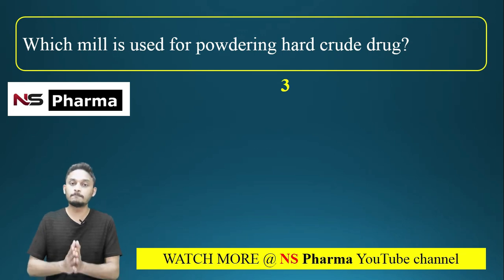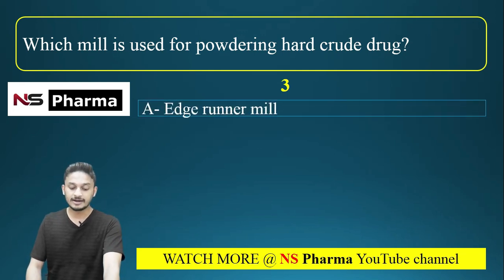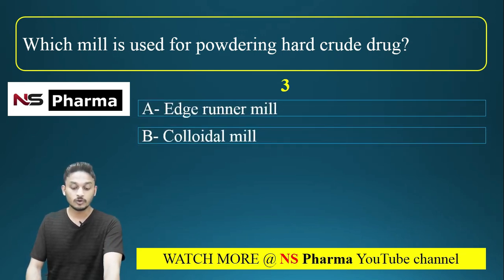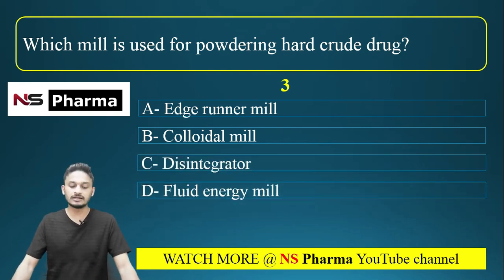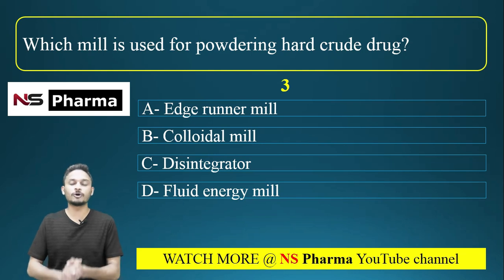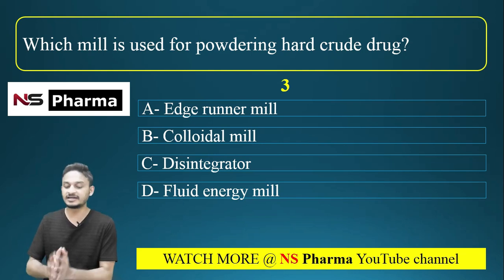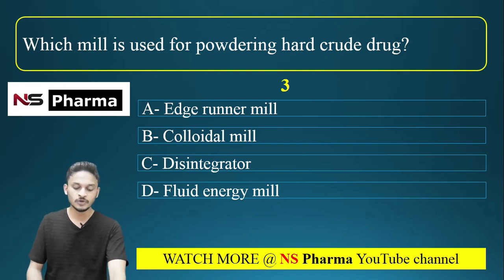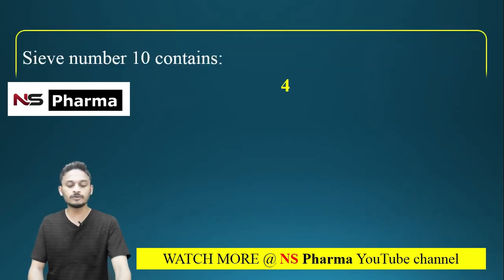Question 3: Which mill is used for powdering hard crude drug? Options: (a) edge runner mill, (b) colloidal mill, (c) disintegrator, (d) fluid energy mill. The correct answer is option C: disintegrator.